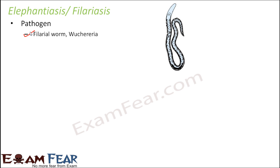You might wonder why the name Elephantiasis. In this disease there is a huge enlargement of a particular area of the body — mostly the lower limbs and the genital part get extremely enlarged. They become so huge that the affected part looks like an elephant, which is an extremely large animal, and that is why the name is Elephantiasis.